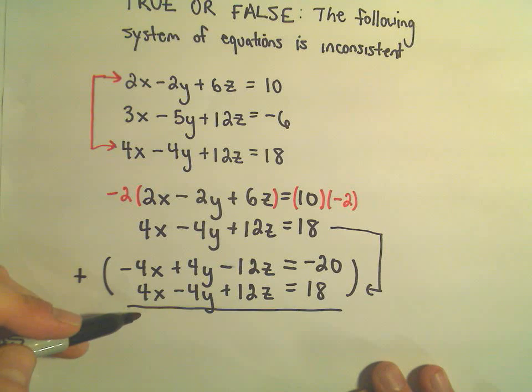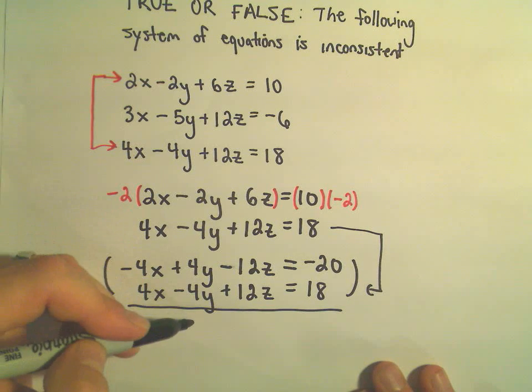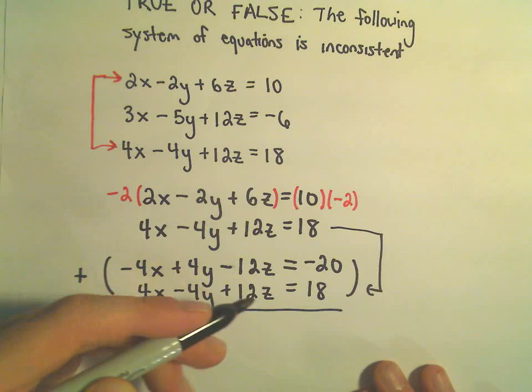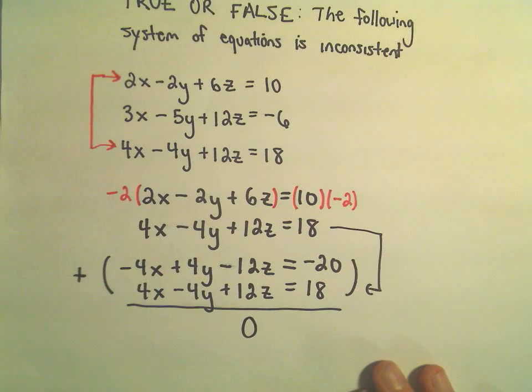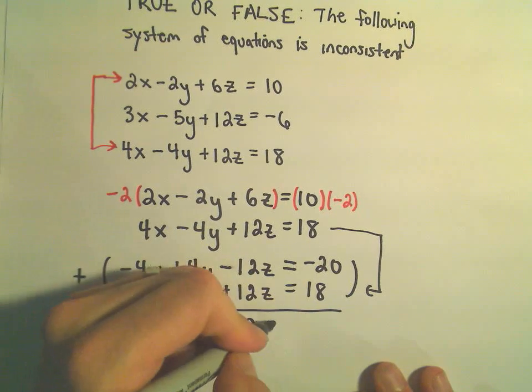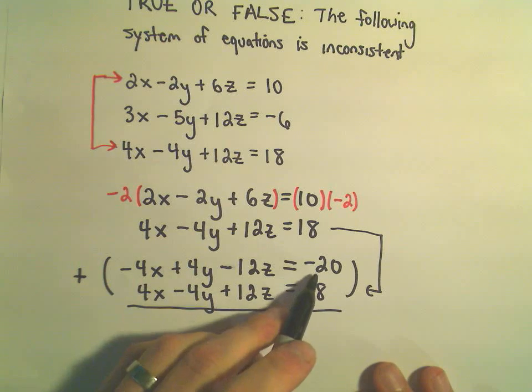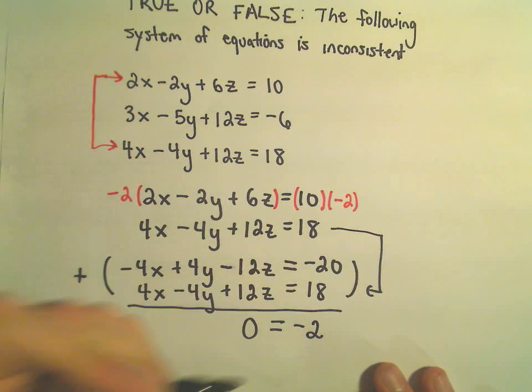we get 0x plus 0y plus 0z, which says we're basically just left with 0 on the left side, equals, well, negative 20 plus 18 is negative 2.